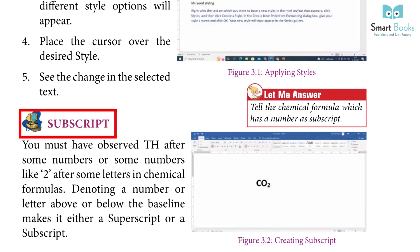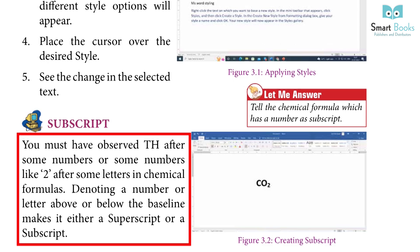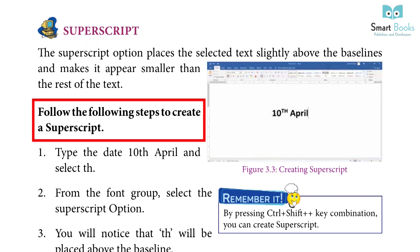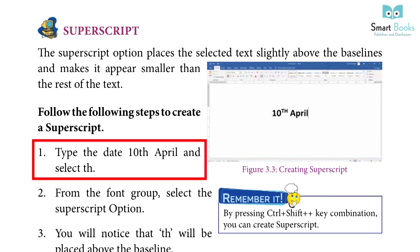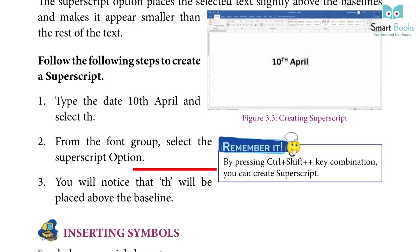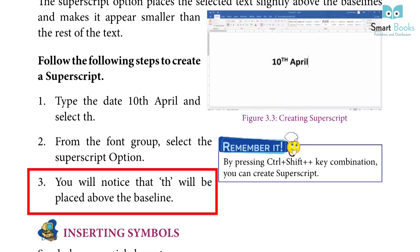Subscript: You must have observed superscript after some numbers, or numbers below some letters in chemical formulas. Denoting a number or letter above or below the baseline makes it either a superscript or subscript. The subscript option places the selected text slightly below the baseline and makes it appear smaller. Steps: 1. Type the formula CO2 and select 2. 2. From the font group, select the subscript option. 3. You will notice that 2 will be placed below the baseline.